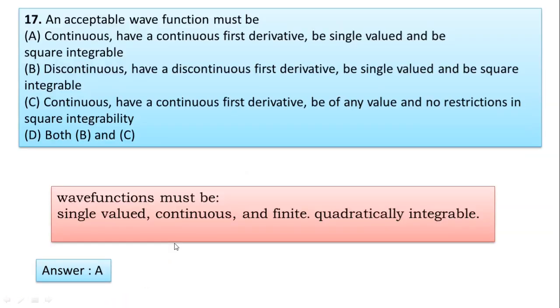Next question: An acceptable wave function must be—here the options. Listen here: it should be continuous, not discontinuous, continuous with the first derivative. Both option B and C—listen here, wave functions must be: what are the characteristics of a wave function?